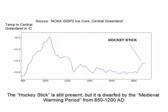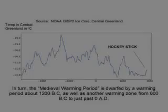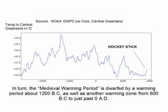From the same ice core samples, we notice that the medieval warming period was much warmer than what we're experiencing now. Going back a few thousand years, we can see that there are periods of warming that were warmer than the medieval warming period. At this time in history, agriculture was thriving and allowed for expansions of civilizations.